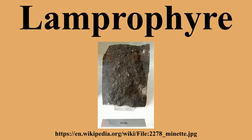Minette contains biotite and orthoclase. Kersantite contains biotite and plagioclase. Vogesite contains hornblende and orthoclase. Spessartite contains hornblende and plagioclase. Each variety of lamprophire often does contain all four minerals but is named according to the two which predominate. These rocks also contain iron oxides, apatite, sometimes sphene, and olivine. The hornblende and biotite are brown or greenish-brown, and as a rule the crystals, even when small, are very perfect and give the thin section views an easily recognizable character.